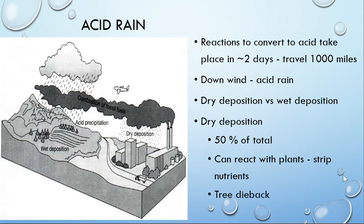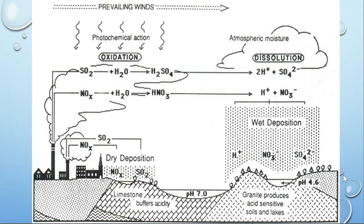Acid rain is where you have sulfur- or nitrogen-based chemicals — the SOx and NOx families (SO₂, SO₃, NO₂, NO). When those get up into the atmosphere, the moisture in the air mixes with the SOx or NOx. If it's a sulfur molecule, you make sulfuric acid; if it's a nitrogen-containing molecule, you make nitric acid — both strong acids. They dissociate, you get ions, and then when it rains you get acid rain.